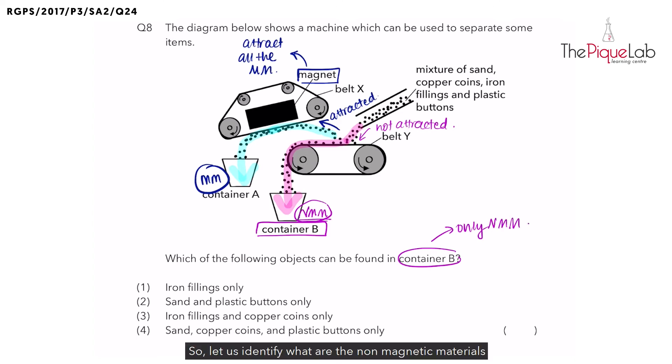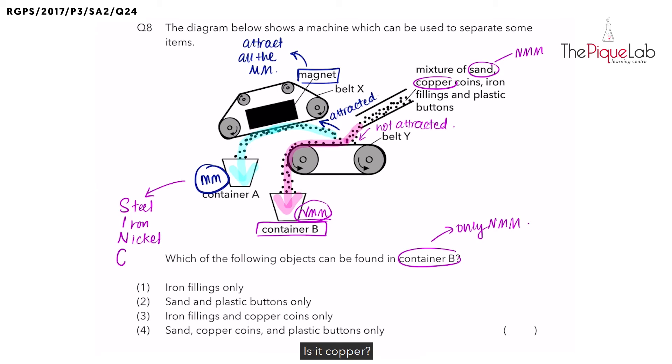So let us identify what are the non-magnetic materials in the mixture over here. Sand is a non-magnetic material. How about copper coins? This is where students get tricked. They identify copper as a magnetic material because some students tend to get confused as they remember the magnetic materials as S-I-N-C. What does S-I-N-C stand for? S stands for steel, I stands for iron, N stands for nickel, and what does C stand for? Is it copper? No, C stands for cobalt, not copper. So do take note.